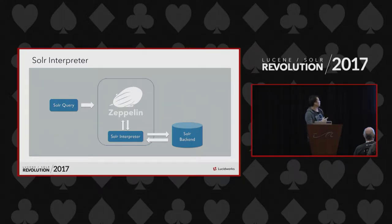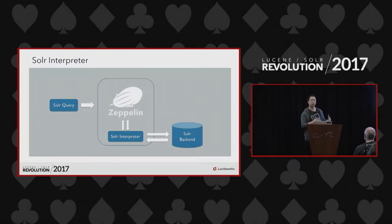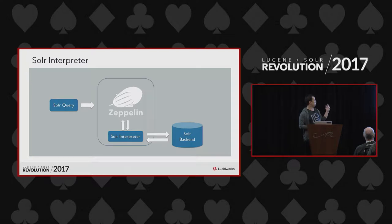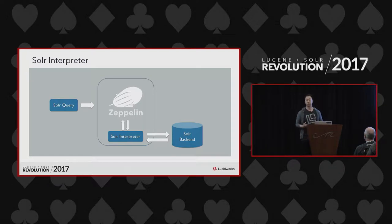On the left-hand side, the user enters a Solr query into the Zeppelin UI notebook. The notebook sends that query through the Solr interpreter. You can think of the interpreter like a middleware adapter that translates Zeppelin-specific language into Solr-specific syntax. Then the interpreter sends the request to the Solr backend, which spits out the response. The interpreter formats the Solr response into Zeppelin-specific format so that Zeppelin can visualize the result — not only as a table but in graphs as well. We will see all of this in the demo.